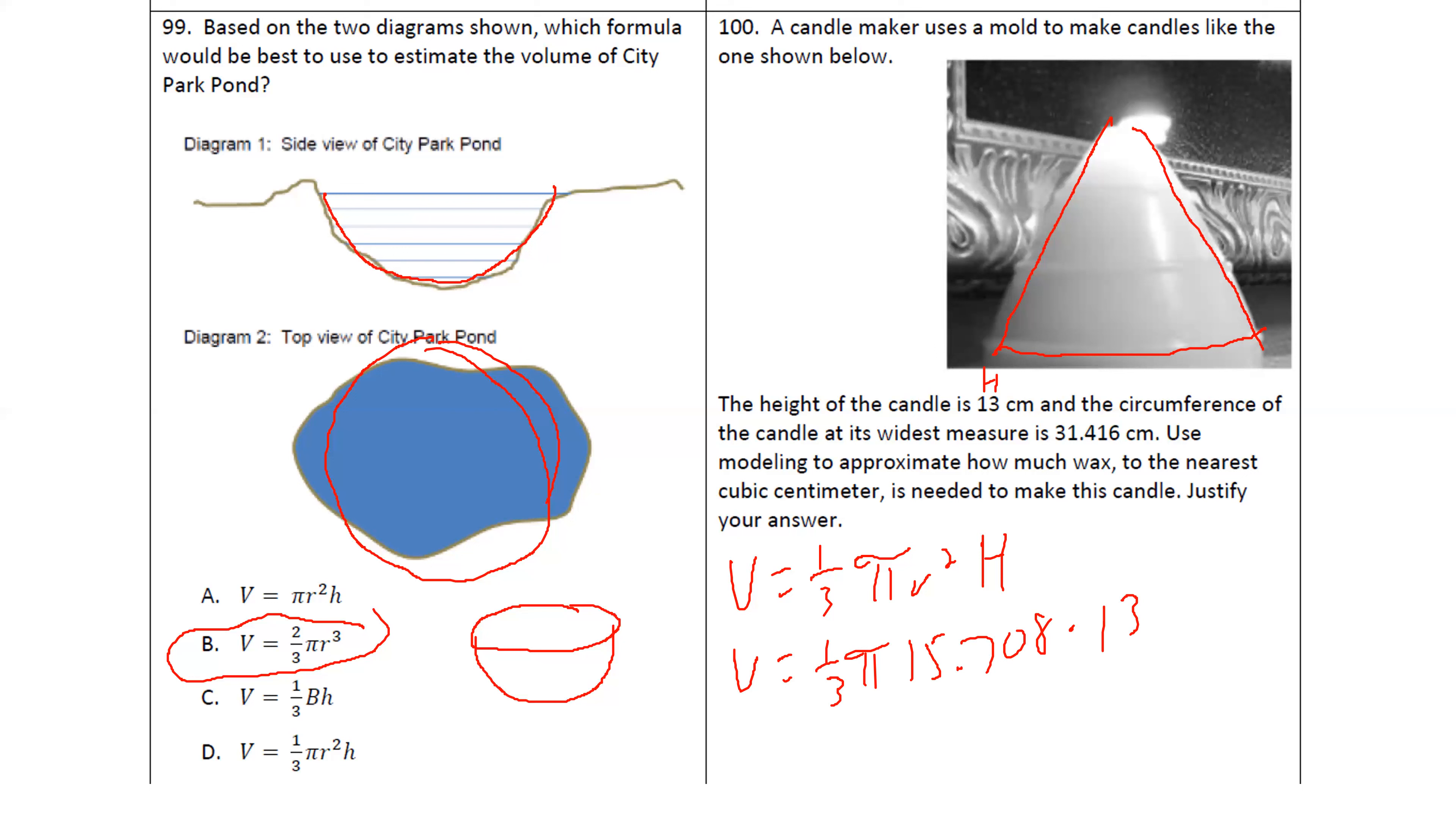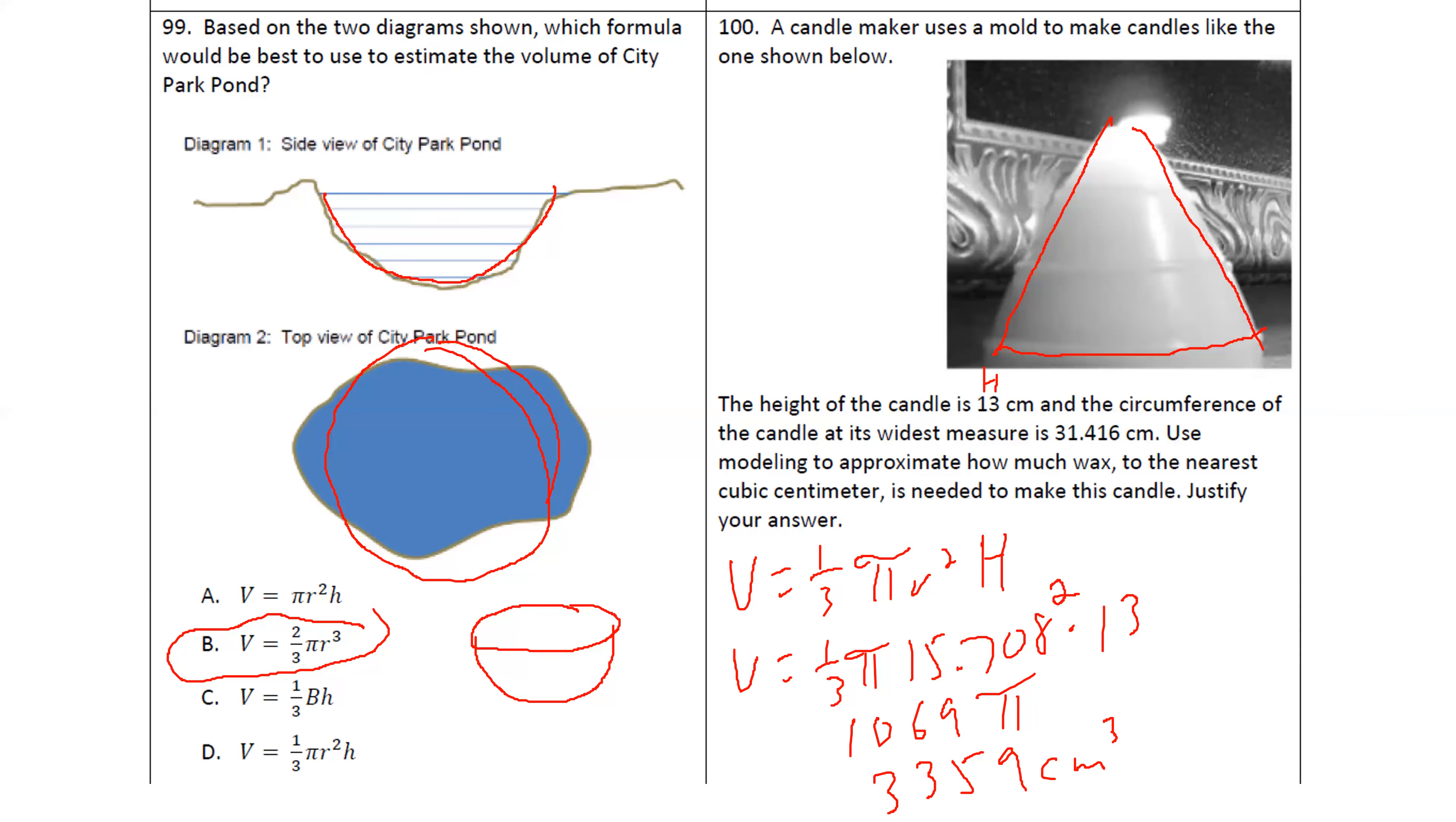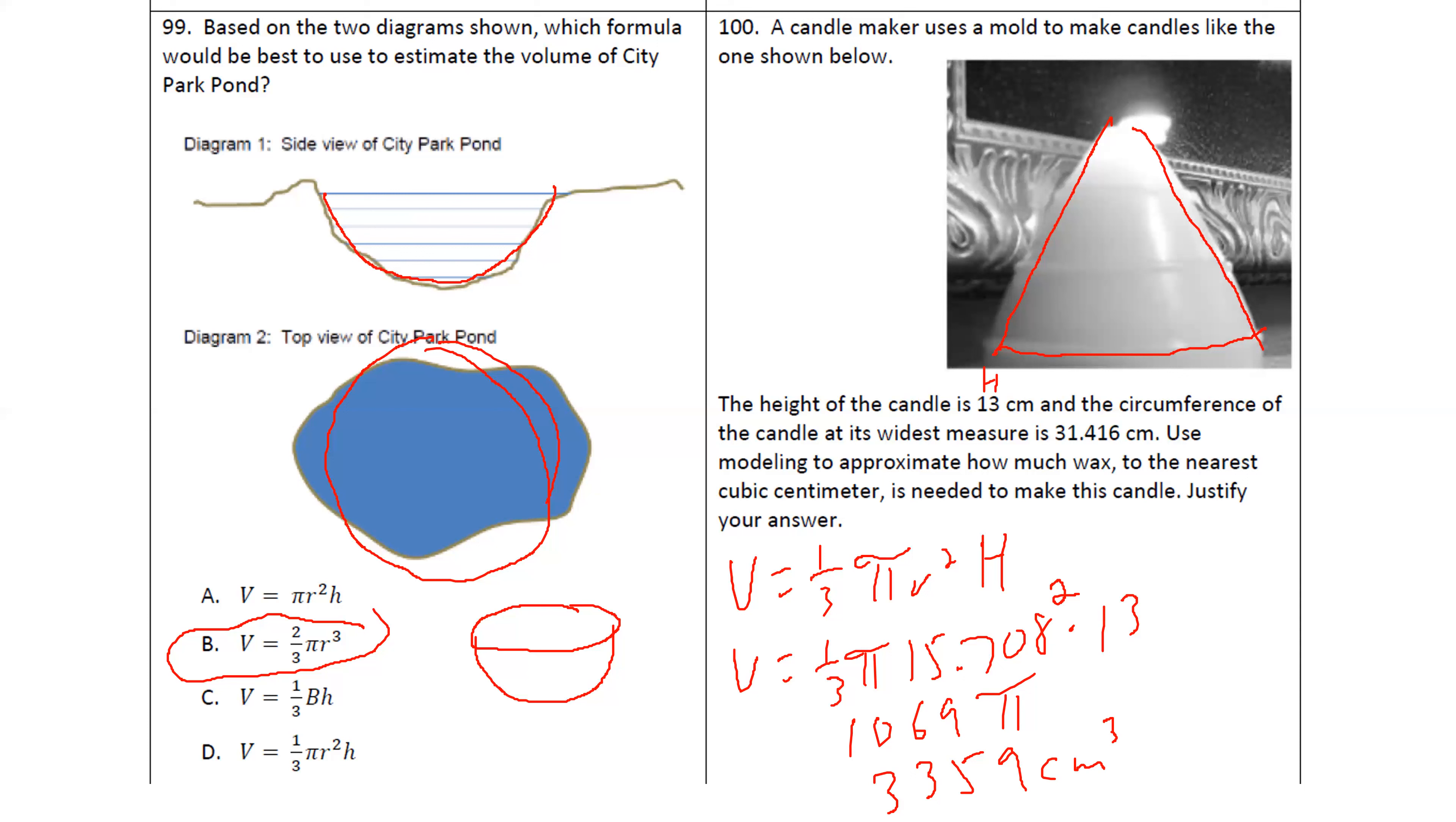Multiply everything out. So times 13. Wait, wait, wait. Don't times 13 yet. Take that back. I have to square this first. Square it. Then times 13. Then divide by three. Then times by pi. And they just want to round to the nearest whole. Nice. So this is our answer. 3,359 cubic centimeters. All right. Answer 3,359 cubic centimeters.